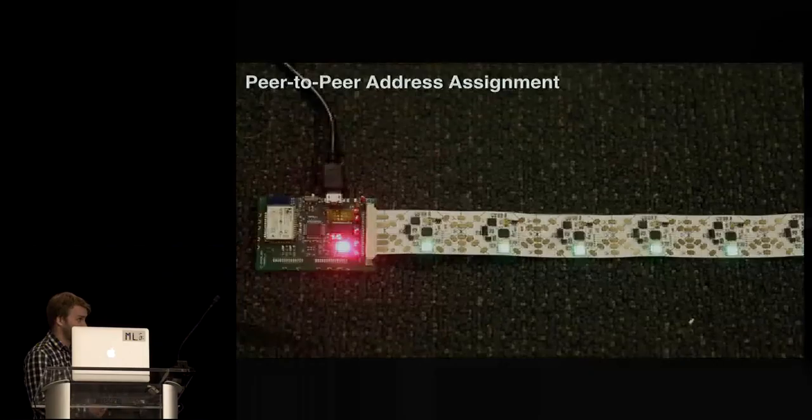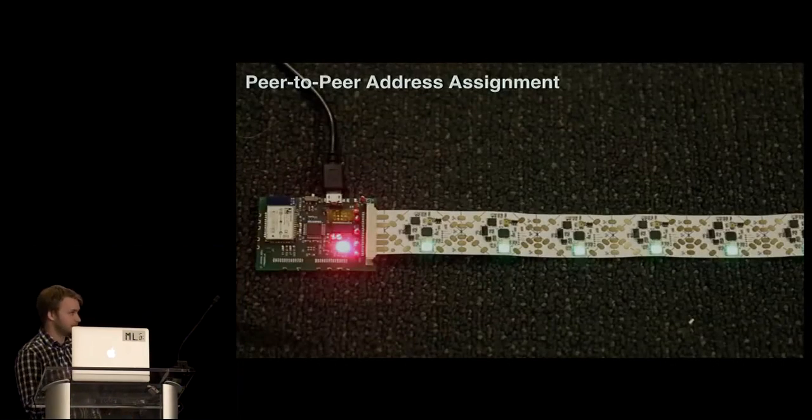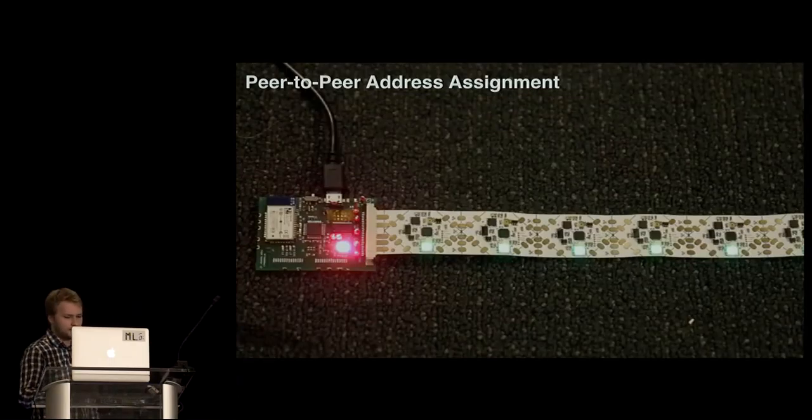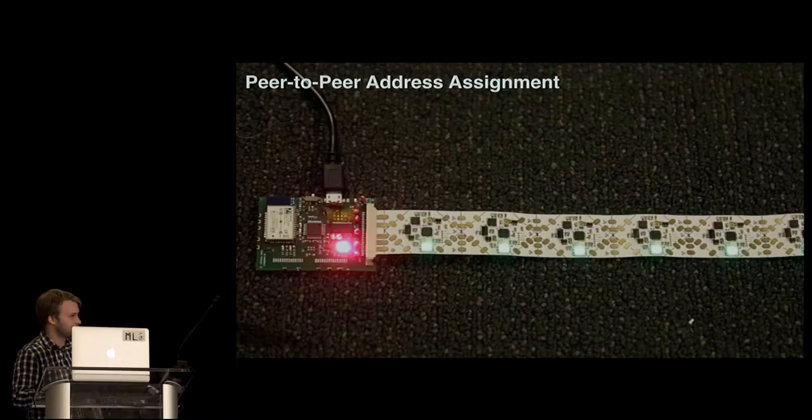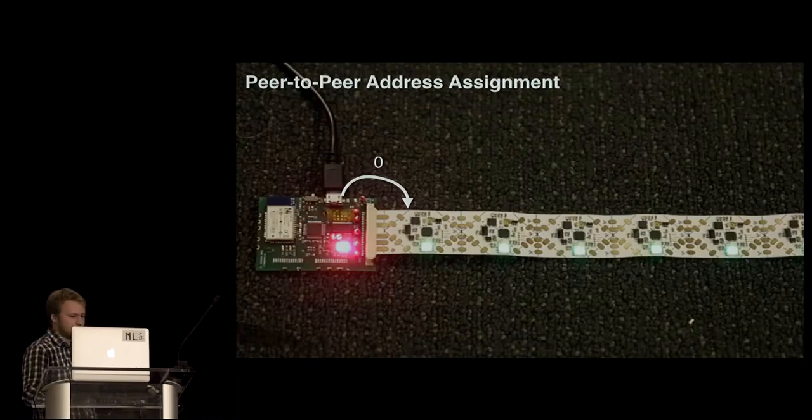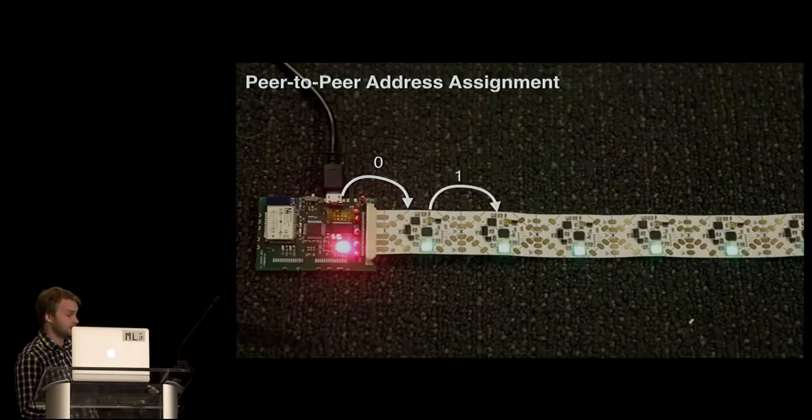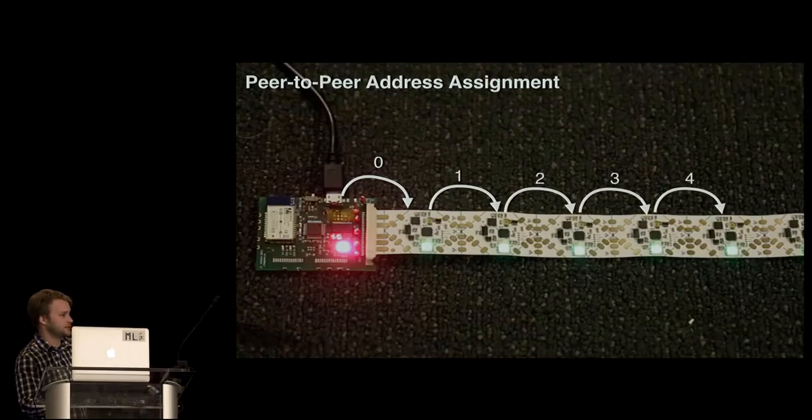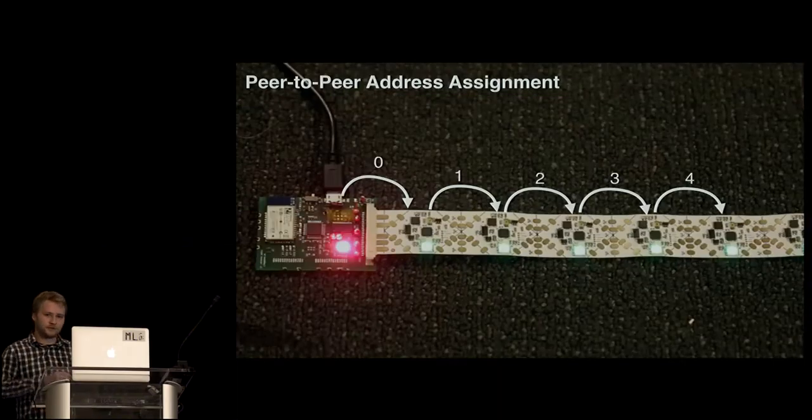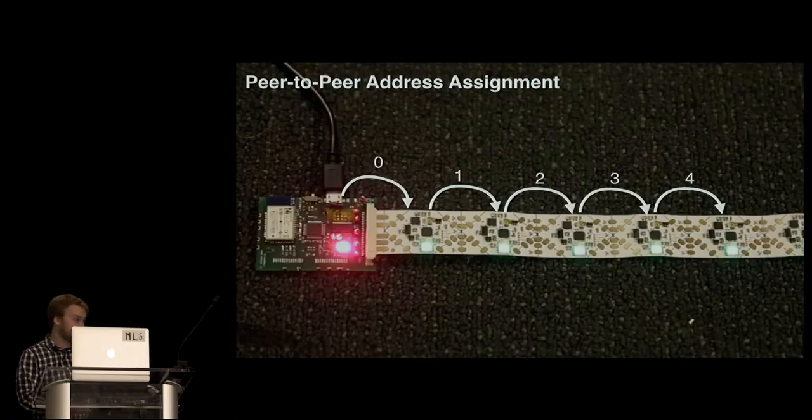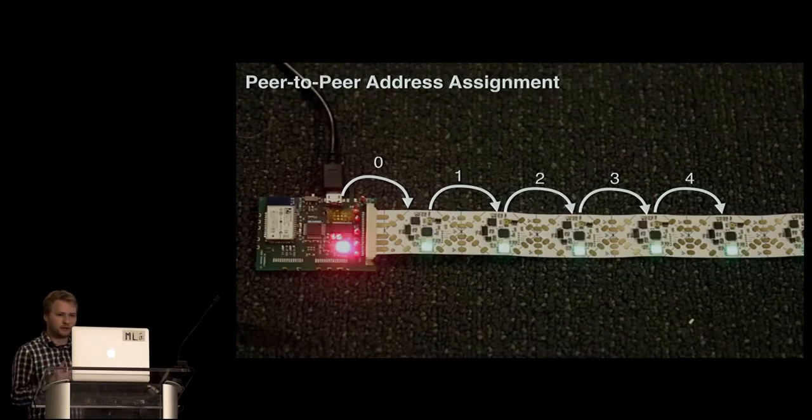So I'm just going to talk about the communication networking. So we have the peer-to-peer network to assign the address for each sensor node. And there, because they need a unique address, and they need to be localized. So here, the master would send a zero to the first one. Then the first one would set its address to zero. And then it would increment by one and send one to the next one. The next one would be set to one. Then it continues until the end. And this way, each sensor node has a unique address corresponding to its location on the tape. And this way, you can have it any length, and it will automatically configure.